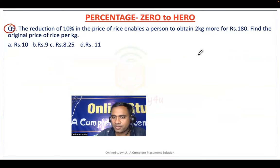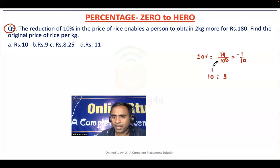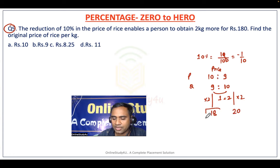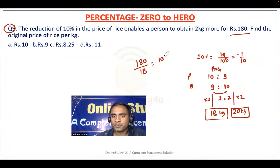Question 9: A 10% reduction in rice price enables a person to obtain 2 kg more for ₹180. 10% = 1/10: price ratio = 10:9, quantity ratio = 9:10. Difference = 1 unit = 2 kg, so 9 units = 18 kg and 10 units = 20 kg. Earlier buying 18 kg for ₹180, so original price = 180/18 = ₹10 per kg. Option A is correct.